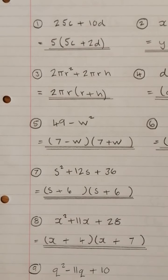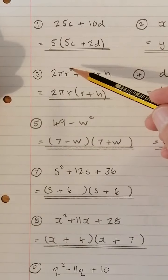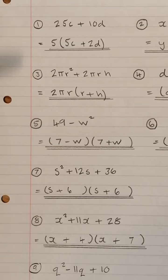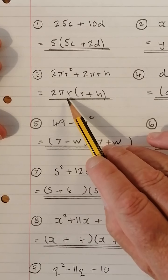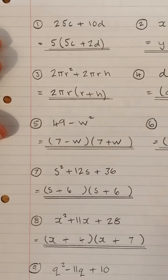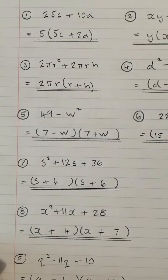If you look at number 3, 2πR² plus 2πRH. That's 2πRR plus 2πRH. So we can take 2πR out as a common factor. And what goes in the bracket? 2πR times R gives 2πR squared, and 2πR times H gives you that. So that's that one done there.